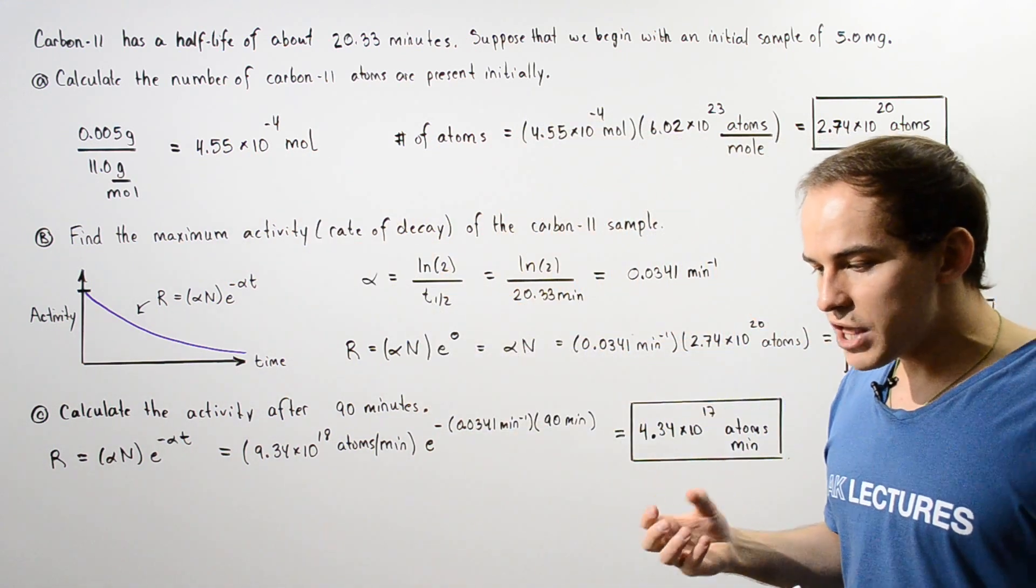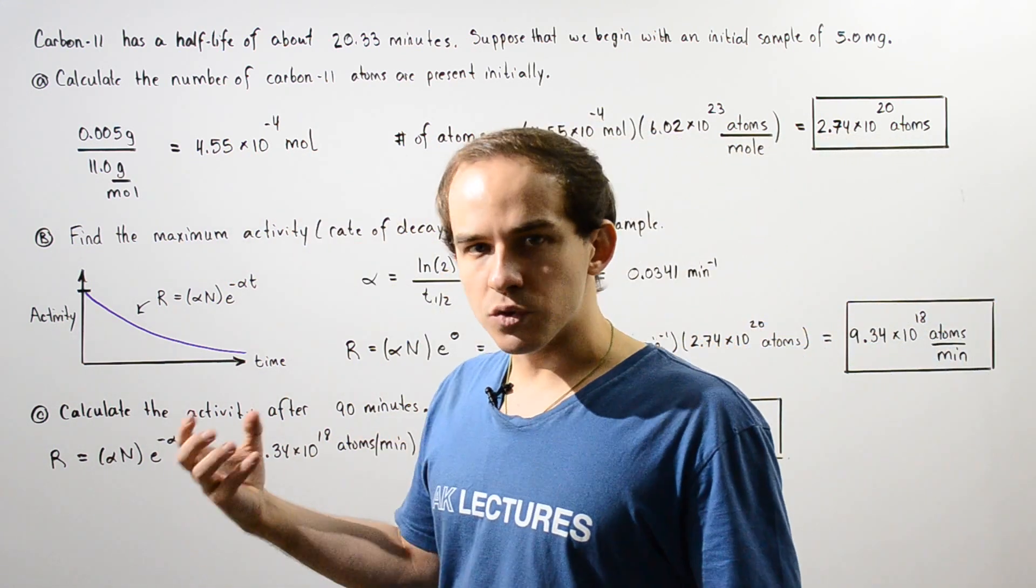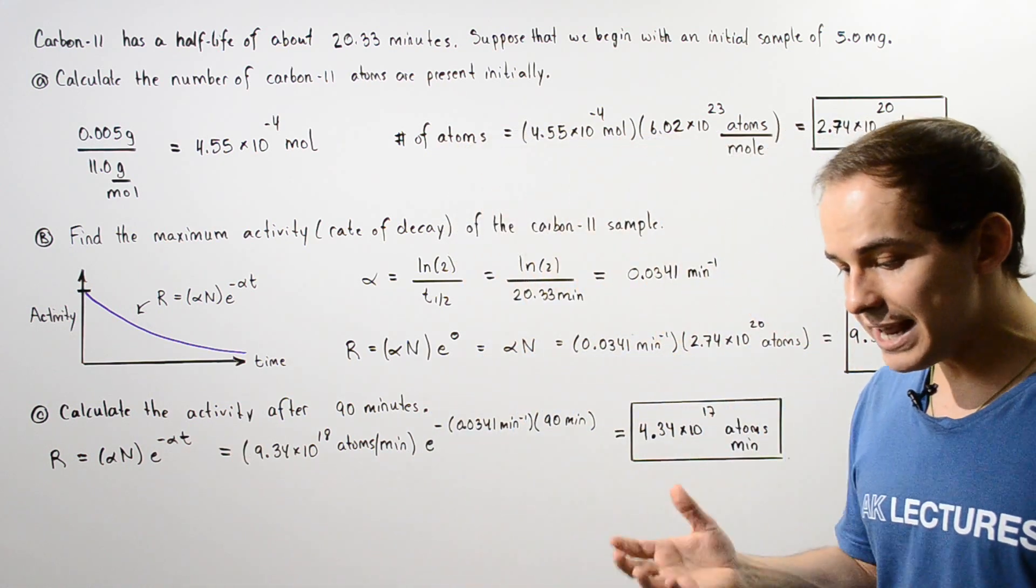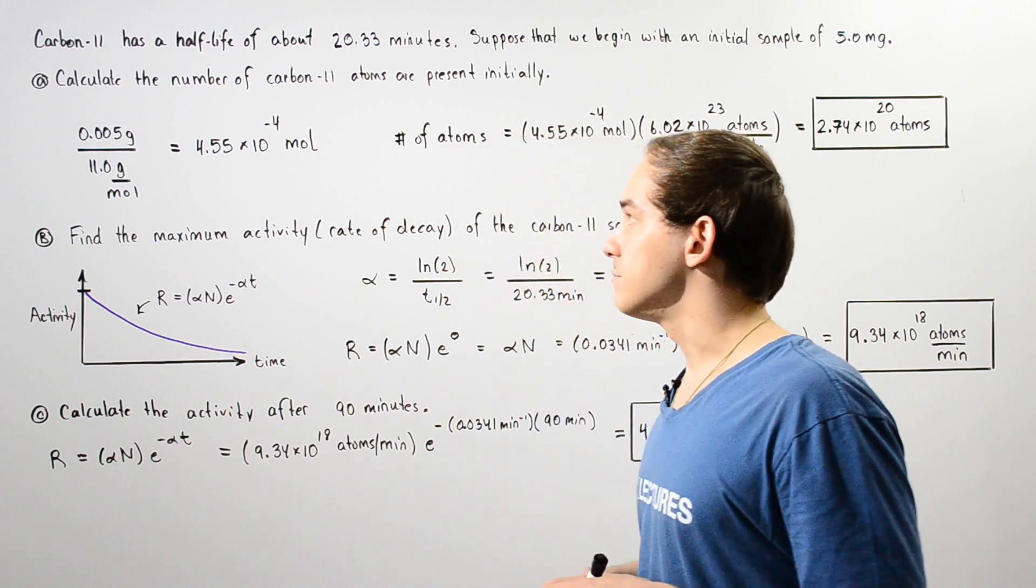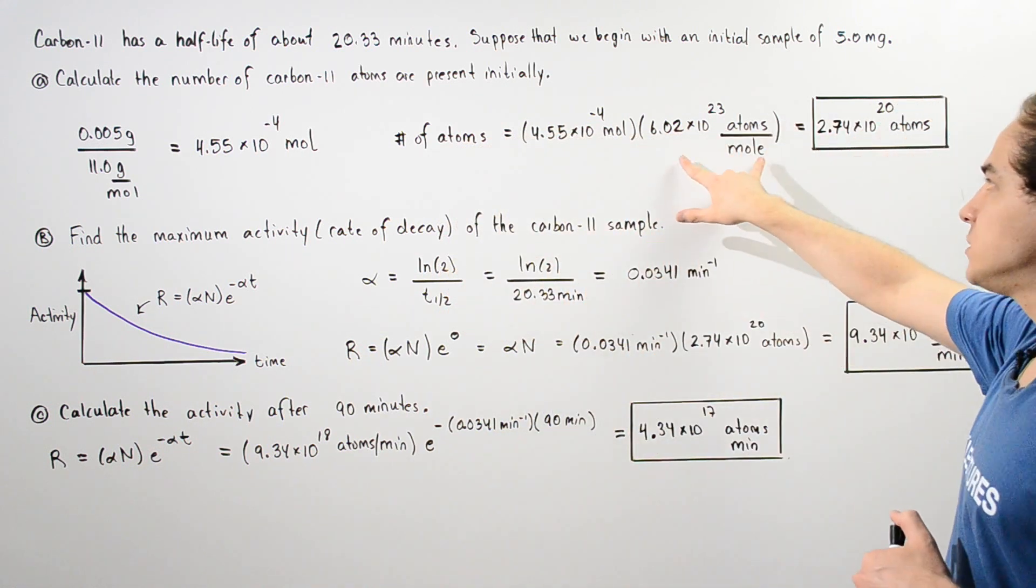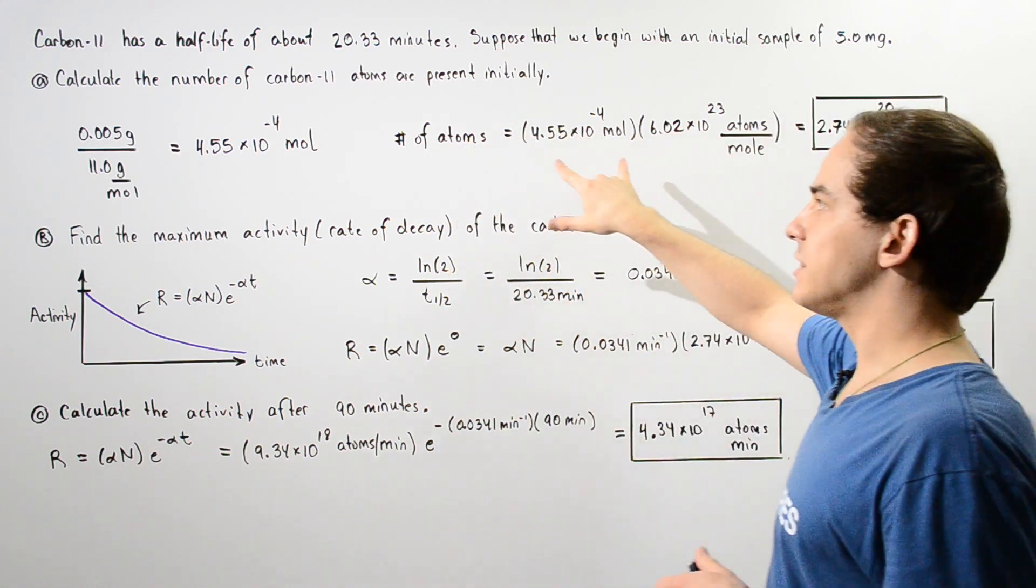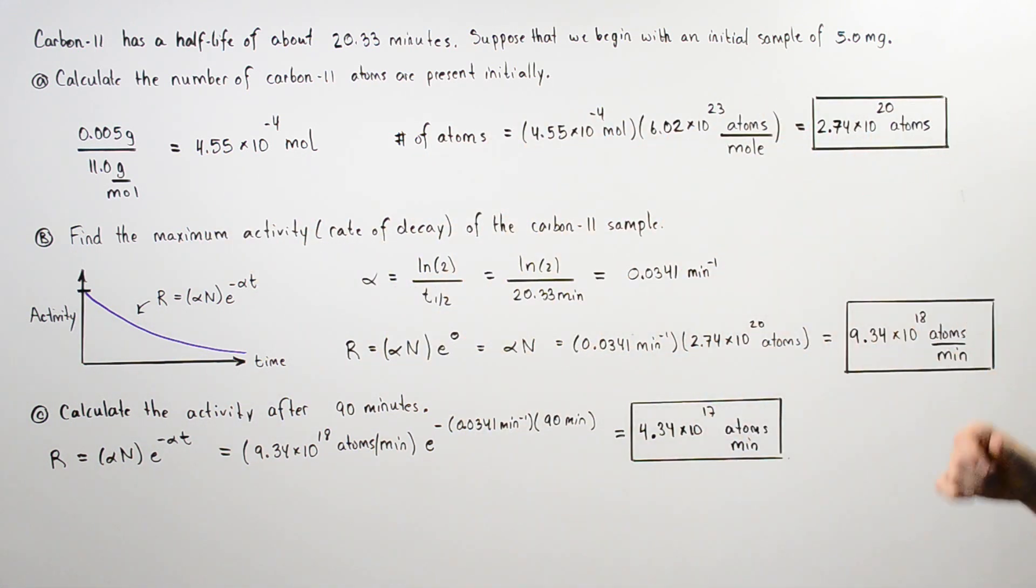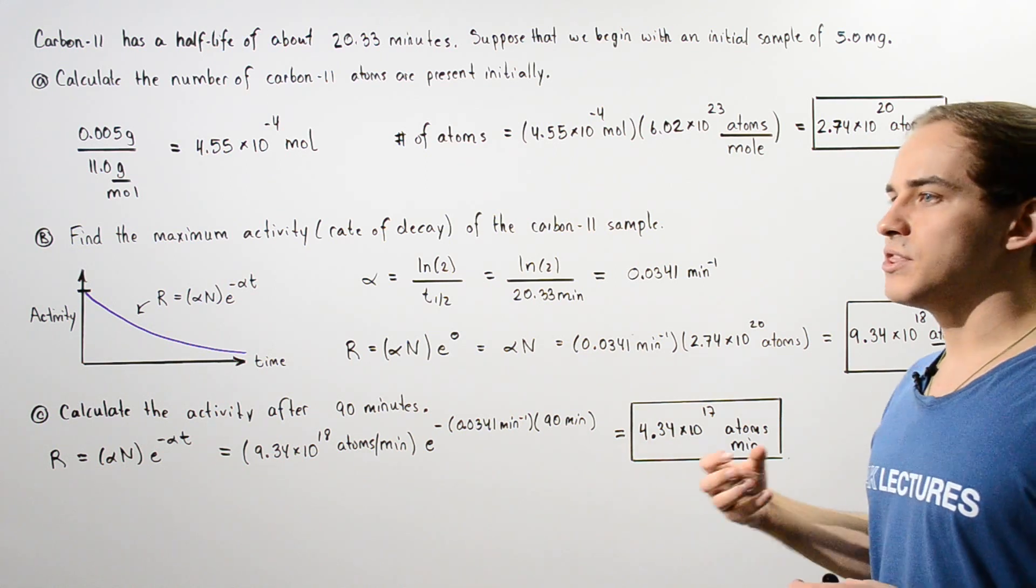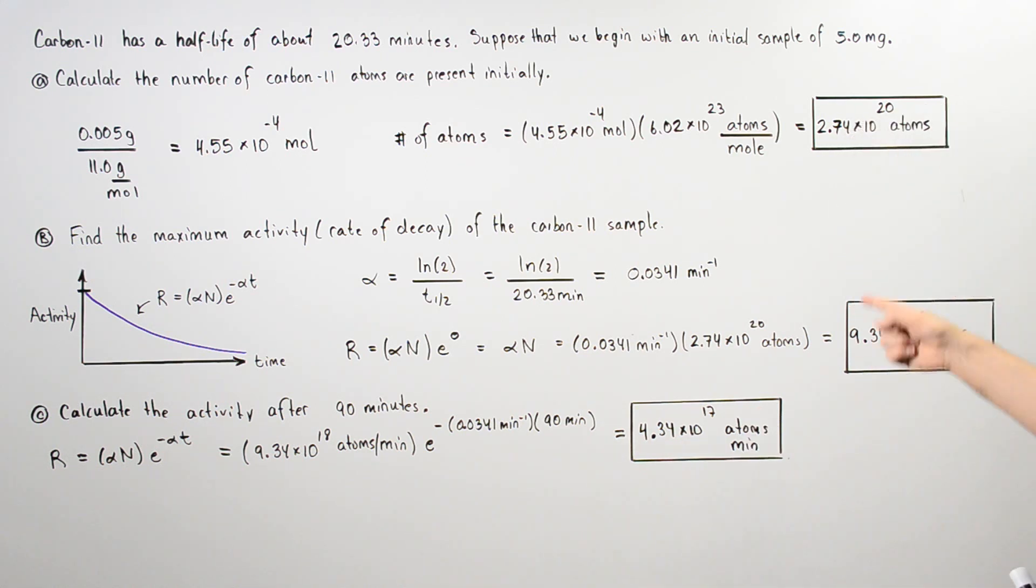Now we know that in one mole, there is an Avogadro's number of atoms. That is 6.02 times 10 to the 23 atoms in one mole. So we multiply Avogadro's number by the number of moles of our sample that we begin with initially. And that gives us the total number of atoms in our initial sample. That is 2.74 times 10 to the 20 atoms.